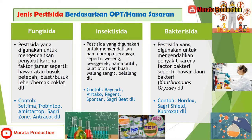Yang keempat yaitu fungisida, yaitu pestisida yang digunakan untuk mengendalikan penyakit karena faktor jamur, seperti hawar atau busuk pelepah, blas atau busuk leher, dan bercak coklat. Contoh produknya adalah Seltima, Trobintop, Amistratop, Sagrijon, Antrakol, dan lain-lain.